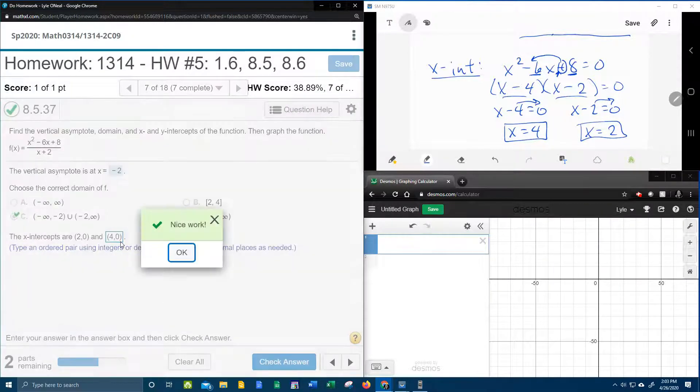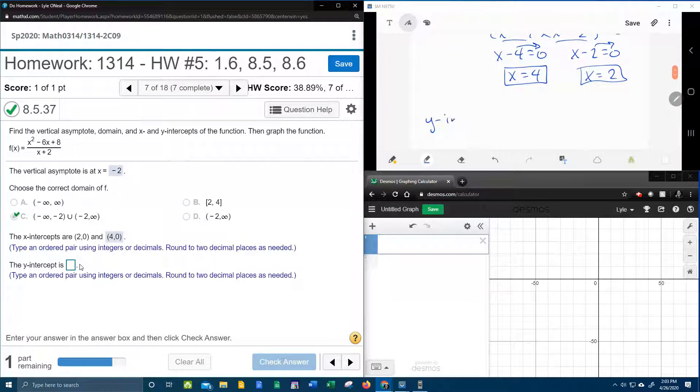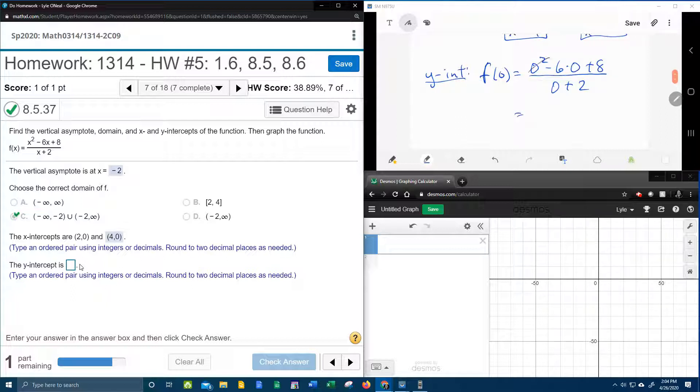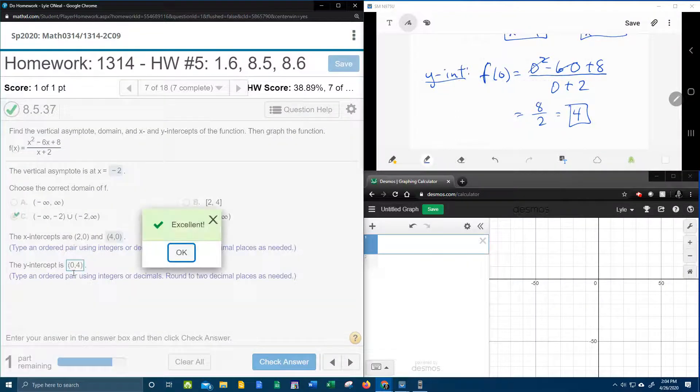So that's going to be 4 comma 0, and the y-intercept is found by letting x be 0. Okay, so in other words, if you want to find a y-intercept, what you really want to find is f of 0. And so we're going to plug a 0 in for every x, and then we're going to work that out and see what we get. Going back to the function, plugging in a 0 for every x, and working that out, that's going to be 0 minus 0 plus 8 over 2, 8 over 2 is 4, that is our y-intercept, which needs to be written as an ordered pair, and if x-intercepts have a y-coordinate of 0, then y-intercepts have an x-coordinate of 0, 0 comma 4, fantastic.